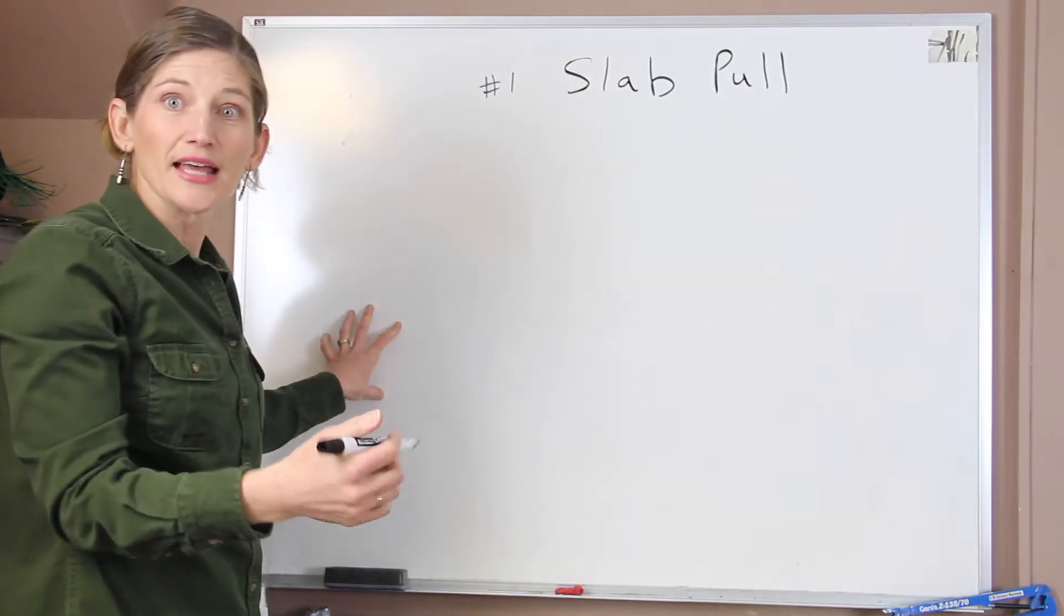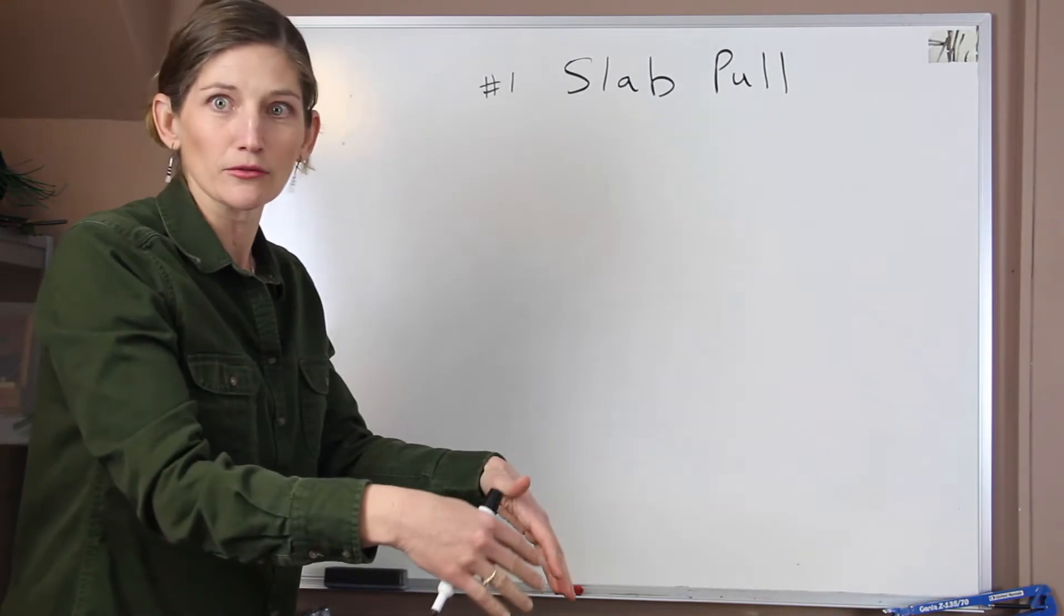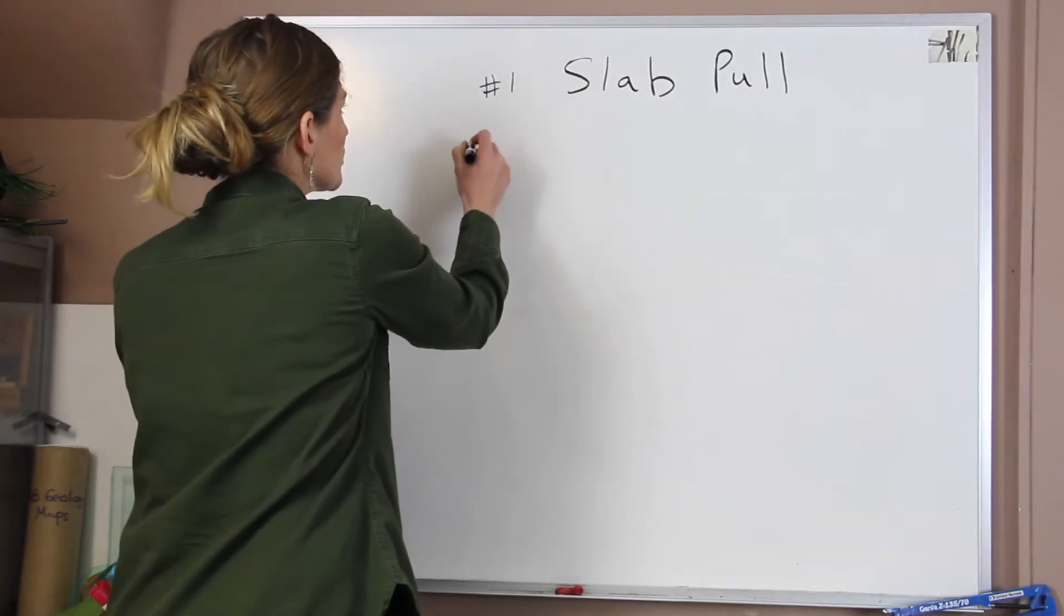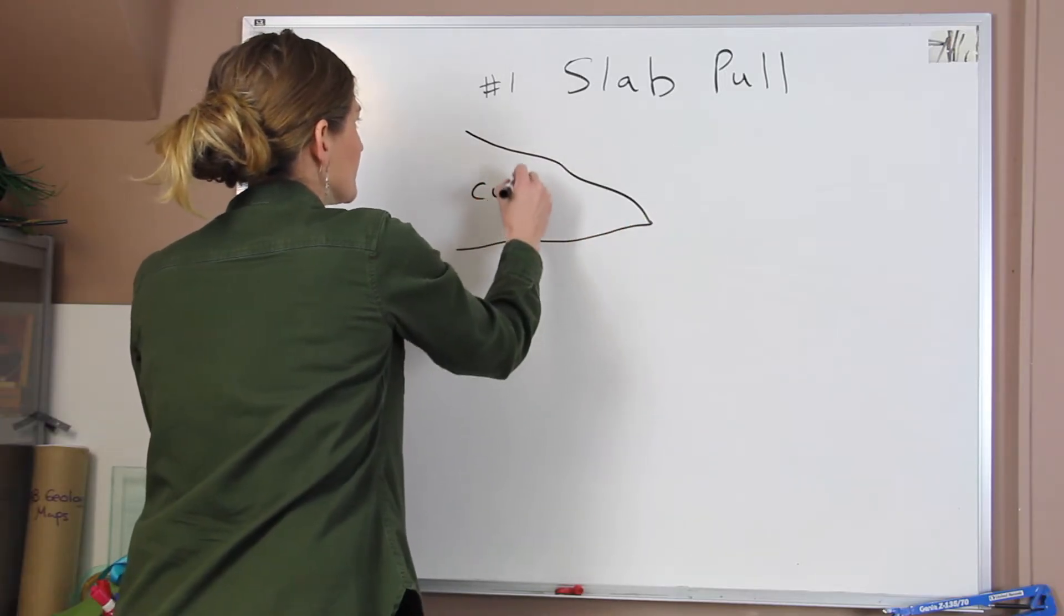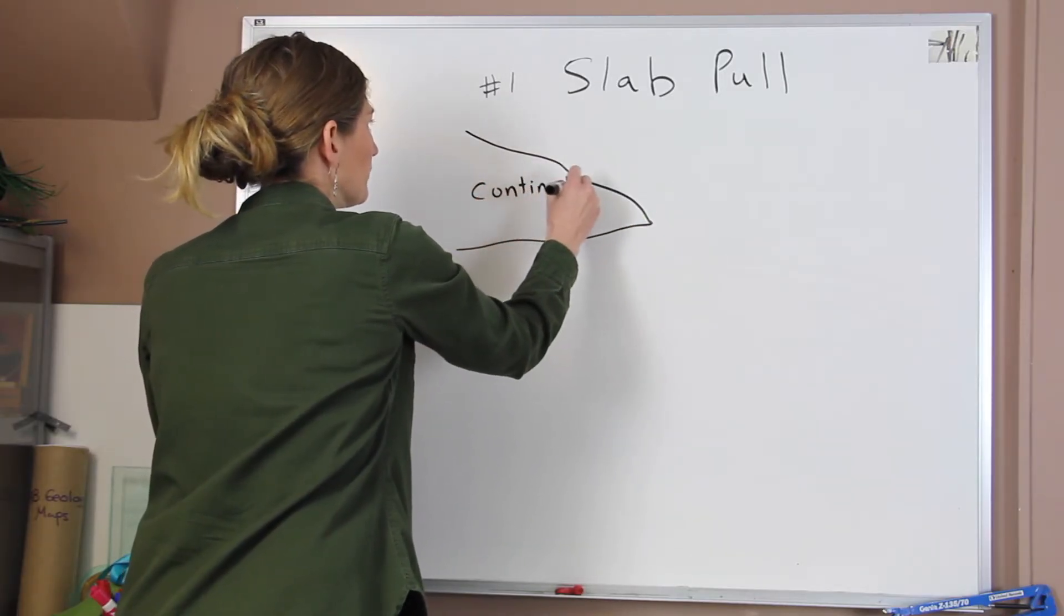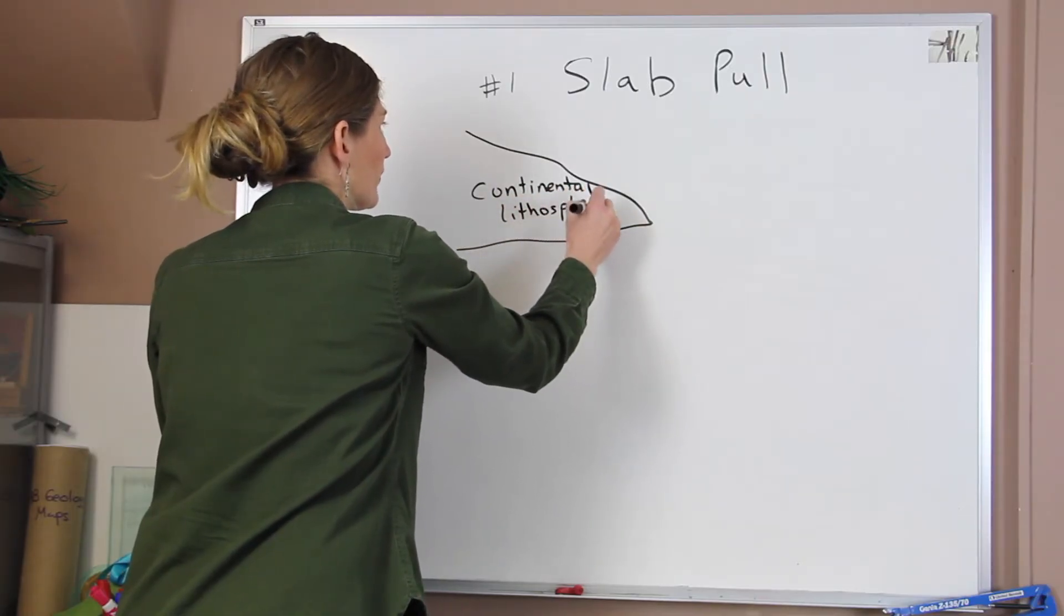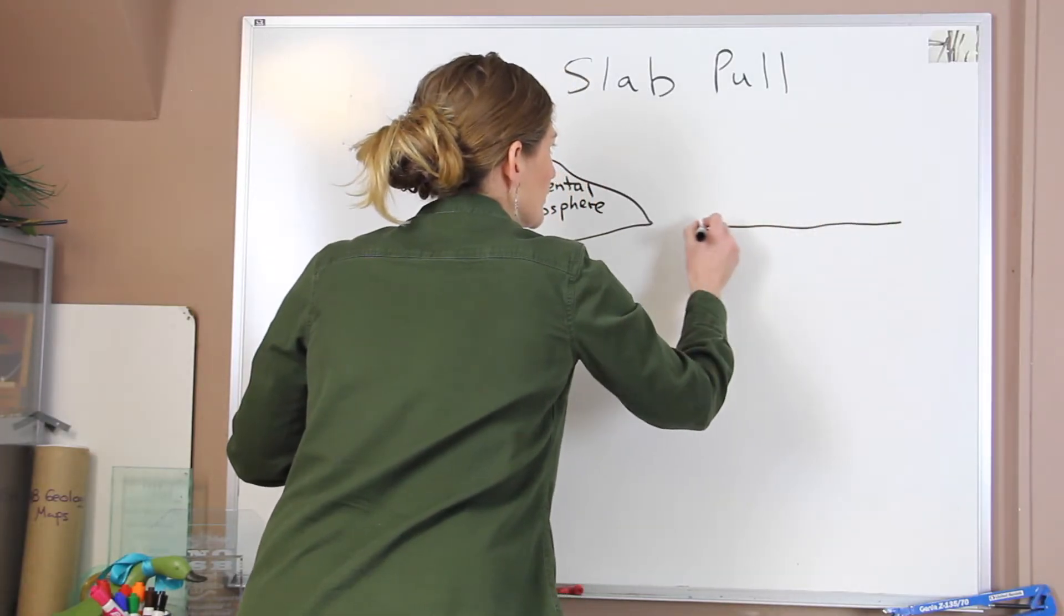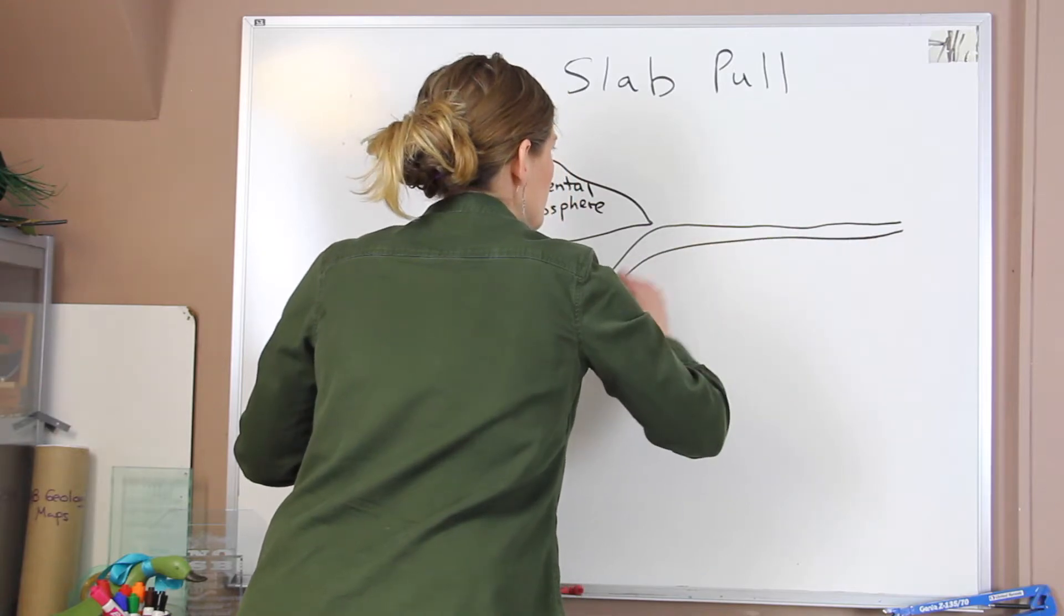Now what slab pull says is that the descending plate in that subduction zone actually plays a role in pulling the rest of the plate behind it. So if we can imagine, we'll kind of draw our nice continental lithosphere. Okay, so that's sitting there. And we have this oceanic plate, which is thinner and denser. And it's going down in this subduction zone.